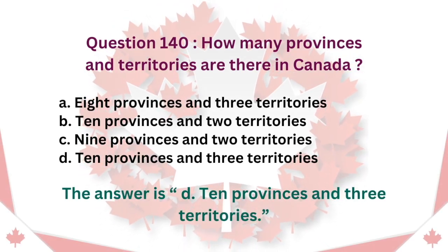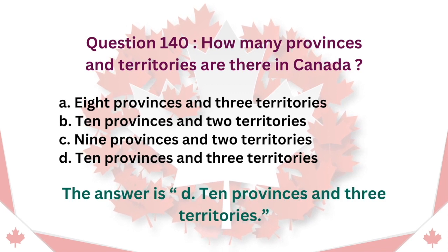Question 140: How many provinces and territories are there in Canada? A. Eight provinces and three territories. B. Ten provinces and two territories. C. Nine provinces and two territories. D. Ten provinces and three territories. The answer is D. Ten provinces and three territories.